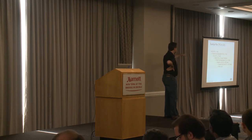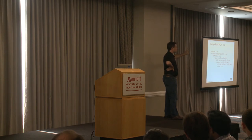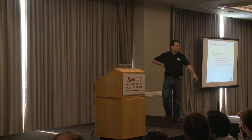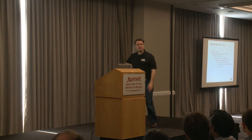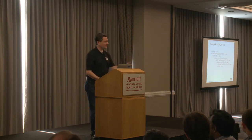How does the parallel sequential scan divide up the work? Each worker claims a block and gets all the rows in that block. When it's done doing whatever it needs to with every row in the block, it moves on to the next block that hasn't been claimed yet.